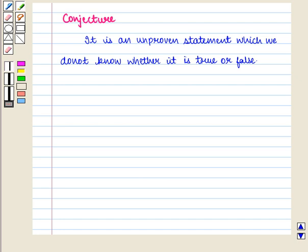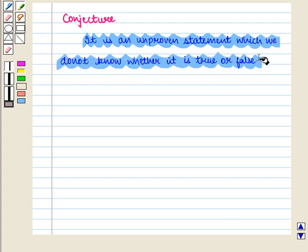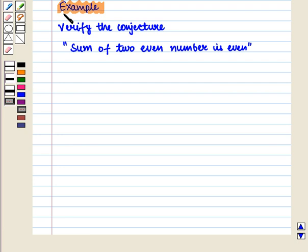Now we are going to learn about conjecture. It is an unproven statement which we do not know whether it is true or false. Let us consider an example.